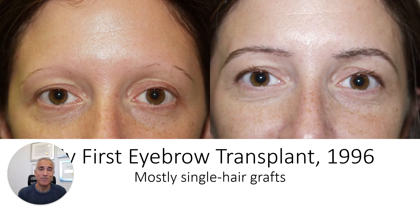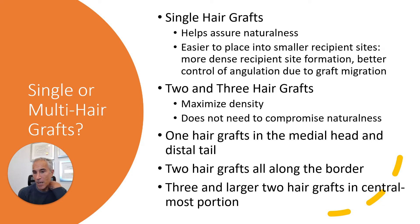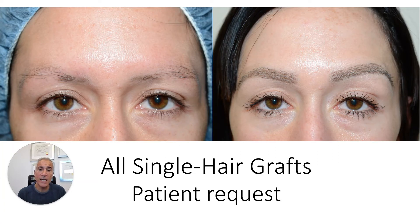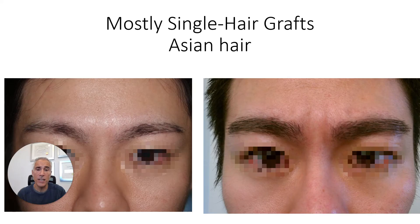This was my very first eyebrow transplant in 1996 — I used mostly single-hair grafts. And here is my 1,400th or so transplant, done with mostly two- and three-hair grafts. The advantage of single-hair grafts is it helps make naturalness easier to achieve and they're easier to place into smaller recipient sites. Two- and three-hair grafts, however, maximize density — for every graft placed, you're getting two or three hairs as opposed to one. We only use single-hair grafts in the medial head and the distal tail, two-hair grafts all along the border, and three-hair grafts in the central body. An example using all single-hair grafts certainly shows a beautiful result, but better density can be achieved when using a mixture of one, two, and three hair grafts — the multi-hair graft approach.